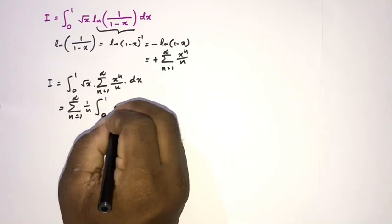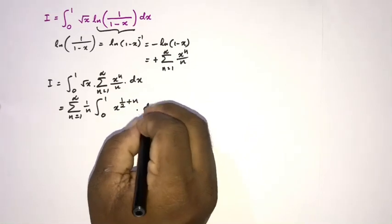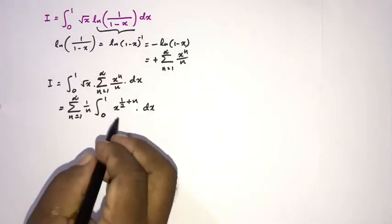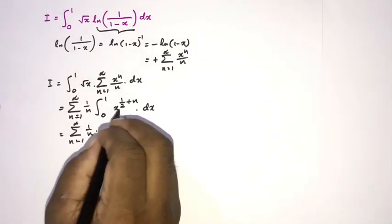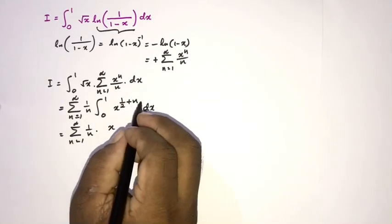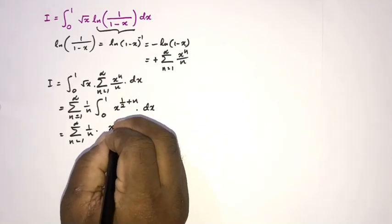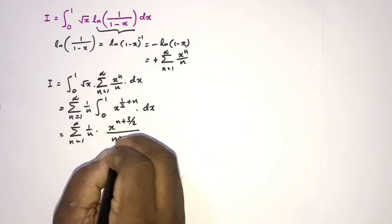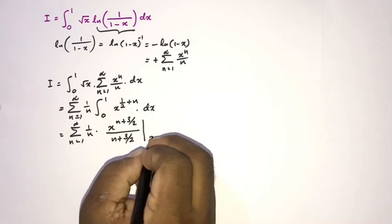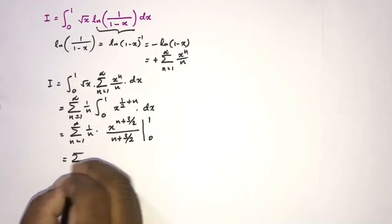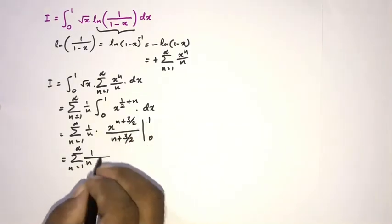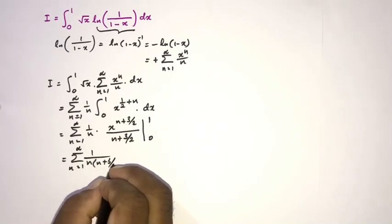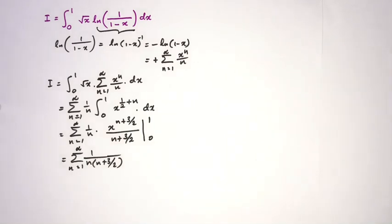So we have the integral from 0 to 1 of x to the (n plus one half) dx. We can then integrate this. The result is the sum from n equals 1 to infinity of 1 over n times x to the (n plus three halves) divided by (n plus three halves), evaluated from 0 to 1.